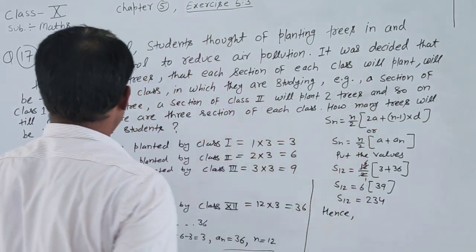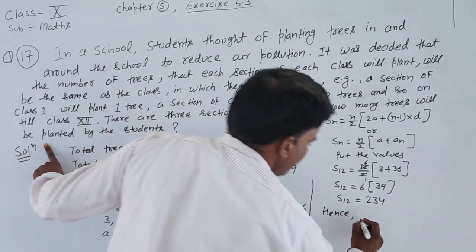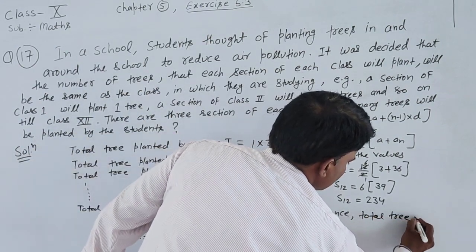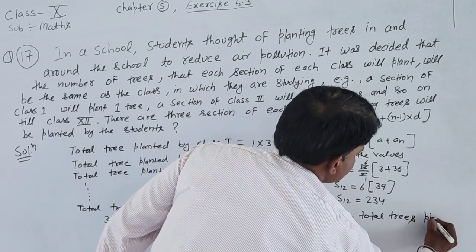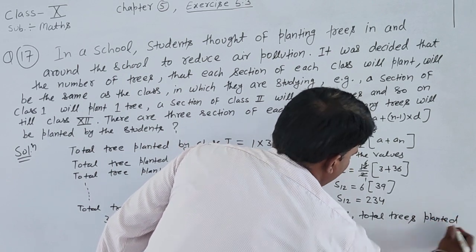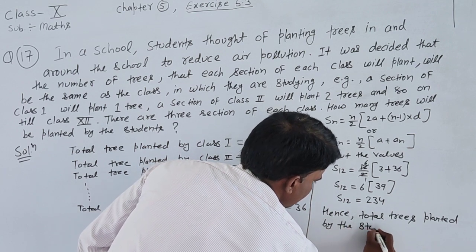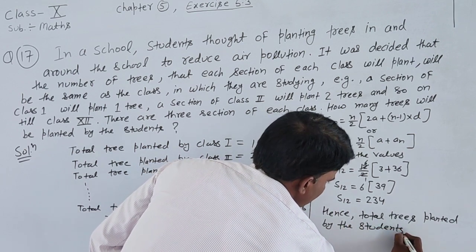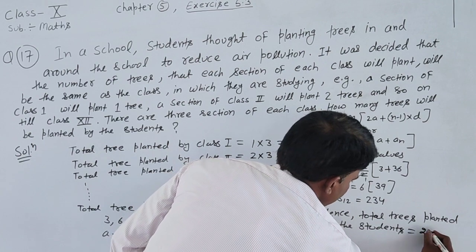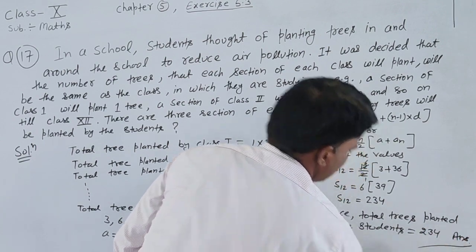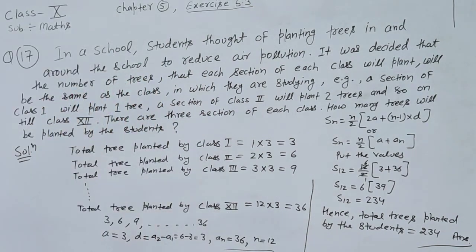It means 234. Total trees planted by the students is equal to 234. That is the answer.